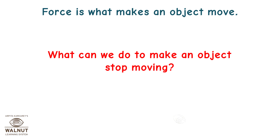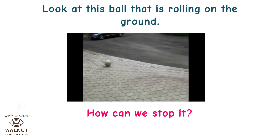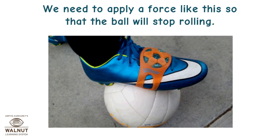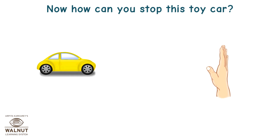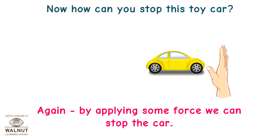What can we do to make an object stop moving? We need to apply force. Look at this ball that is rolling on the ground. How can we stop it? We need to apply a force like this so that the ball will stop rolling. By applying some force, we can also stop the car.